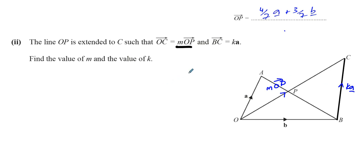So now, they've told us O to C is m times O to P. And I know what O to P is from the previous part of the question. So I can say O to C is m times what we found in the previous part of the question, which is 4 over 7a plus 3 over 7b. You can expand that just to make things easier later on. So it's 4 over 7 times ma plus 3 over 7 times mb. That's the vector from O to C.